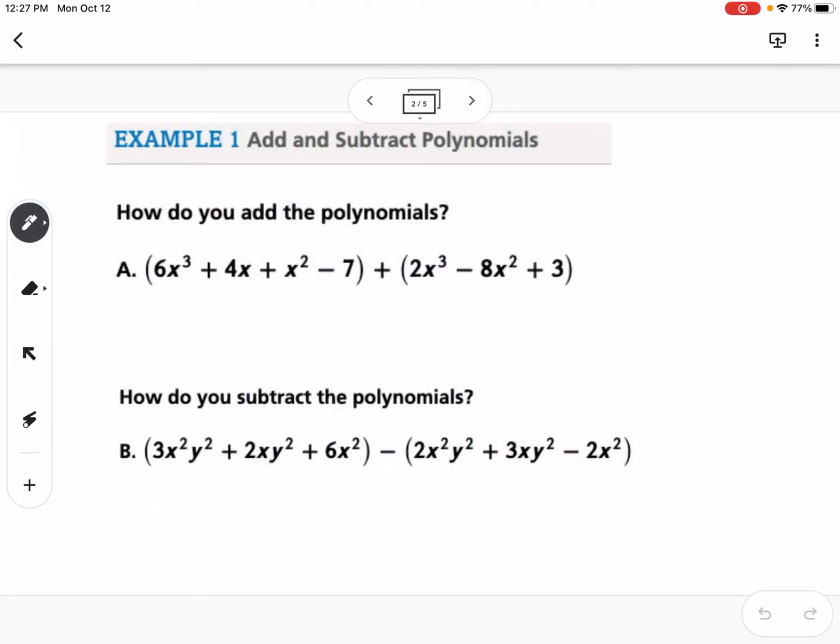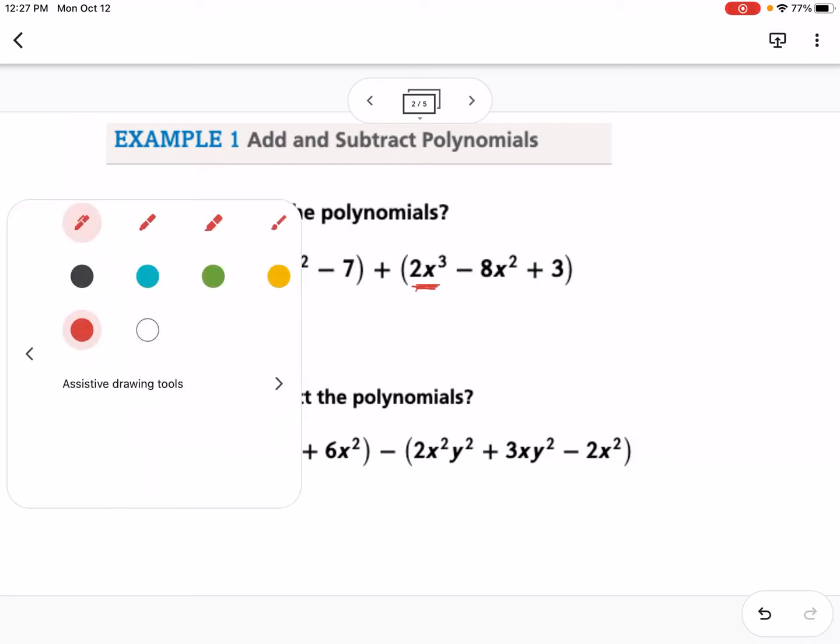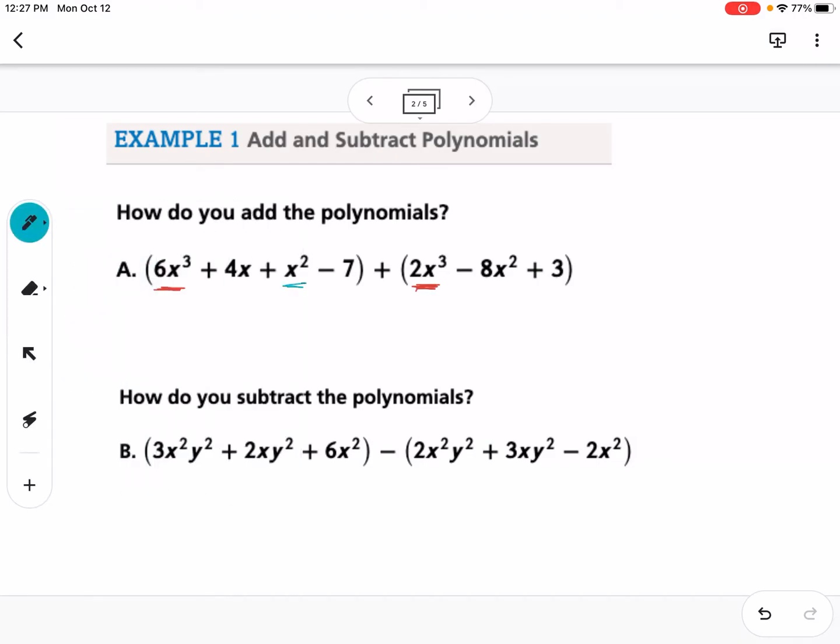So the first example is adding and subtracting. This is just like stuff that we've done in Algebra 1 before, it's adding like terms or subtracting like terms. So I'm going to color code this here. So we have a 6x cubed and we have a 2x cubed. We have an x squared here and a negative 8x squared there. We have a 4x, and then we don't have any other x's, and then we have a minus 7 and a plus 3. So basically, we are combining the parts that are the same color, so the same x values.